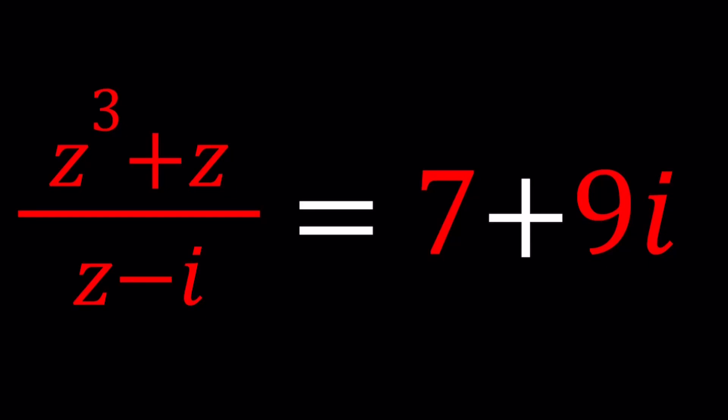Hello everyone, welcome to a plus bi. This channel is all about complex numbers and in this video we're going to be solving a rational equation with cubes. We have z³+z divided by z-i equals 7+9i.